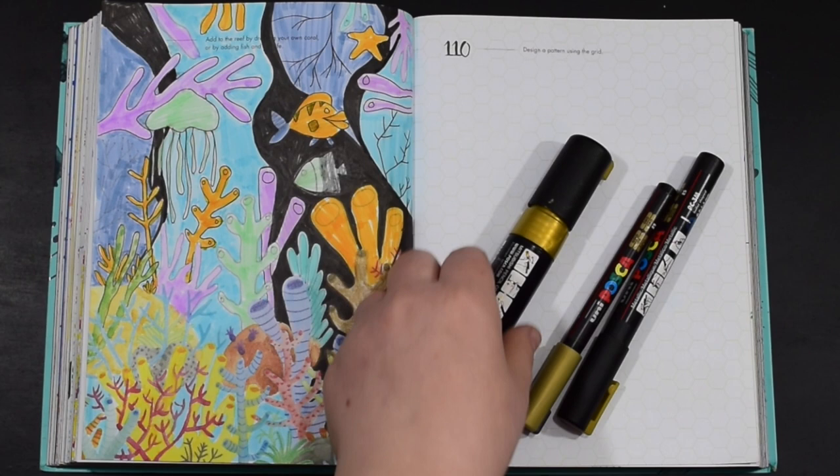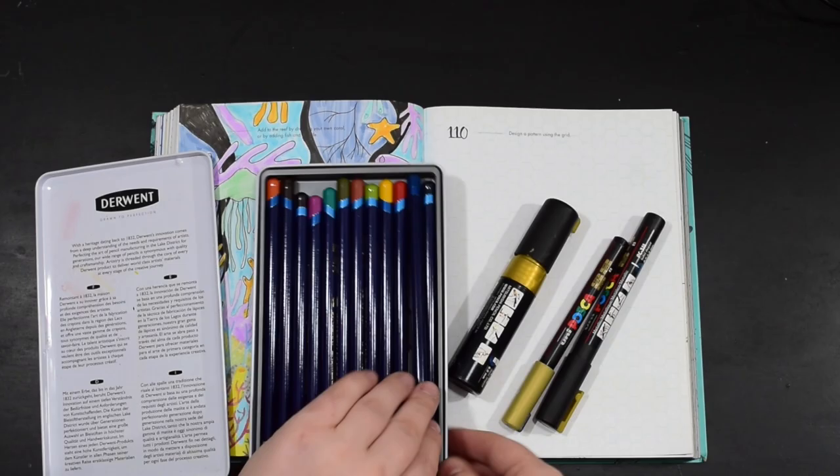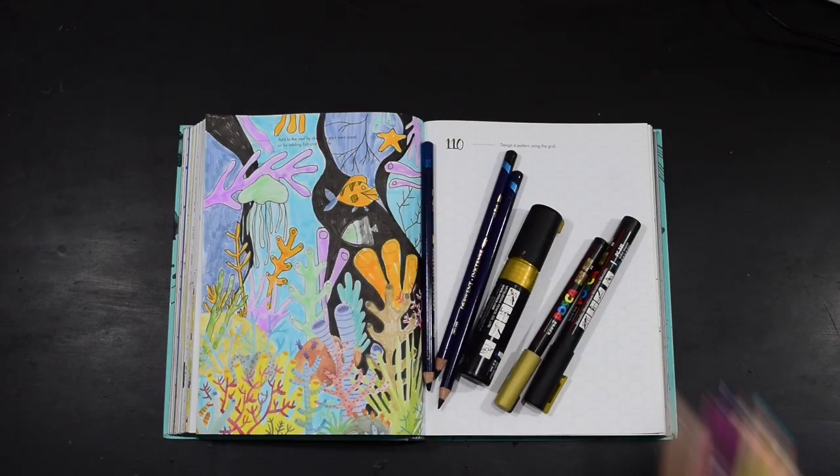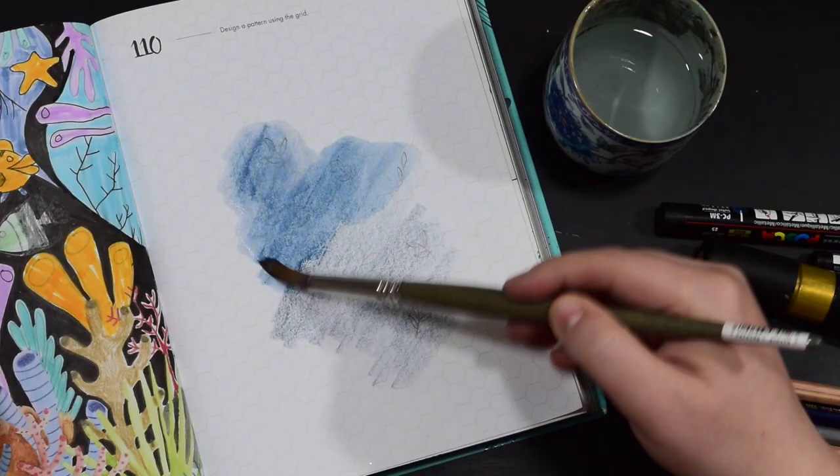So I've grabbed some gold Posca paint markers, some dark blues and grays, and yeah I'm just going to add a big splash of color onto this page to start with. So I'm using my Derwent pencils and then I'm going to add water to it to create a bit of a base.